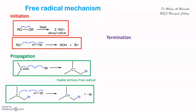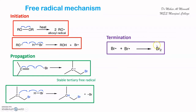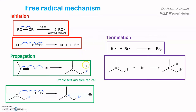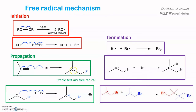If a bromine free radical combines with another bromine free radical, bromine molecule is formed and the reaction is terminated because no free radical is available for further reaction. Another way of termination is the combination of the bromine free radical with the alkyl free radical formed during the propagation step, giving a dihalo compound. Two alkyl free radicals can also combine to form a higher-order alkane, terminating the reaction. Any step in which a free radical is quenched is called the termination step.